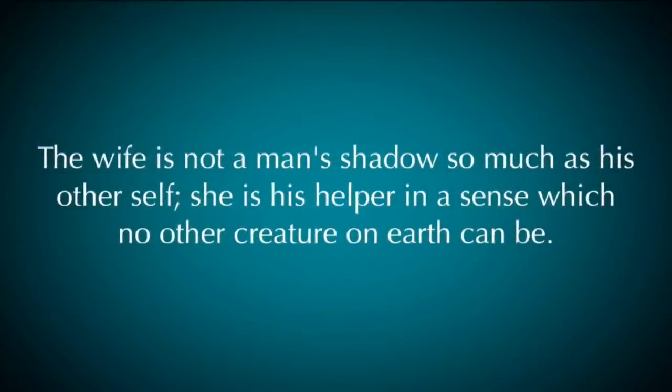The rabbis taught the wife is not a man's shadow so much as his other self — his helper in a sense which no other creature on earth can be. So the Scripture speaks: 'It is not good that man should be alone. I will make him a helper comparable to him.' Verse 19: 'Out of the ground the Lord God formed every beast of the field and every bird of the air, and brought them to Adam to see what he would call them. And whatever Adam called each living creature, that was its name.' But for Adam there was not found a helper comparable to him.